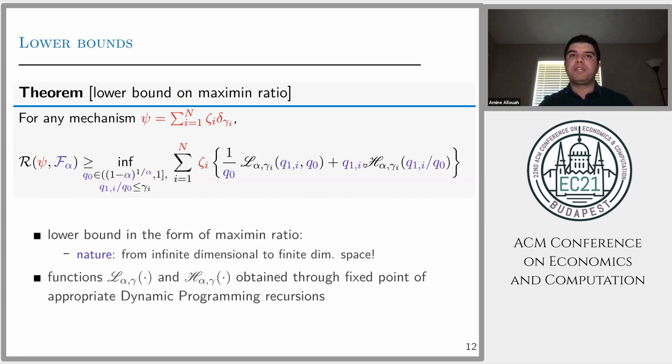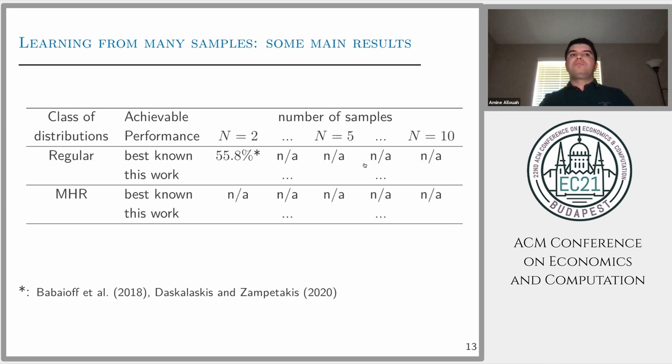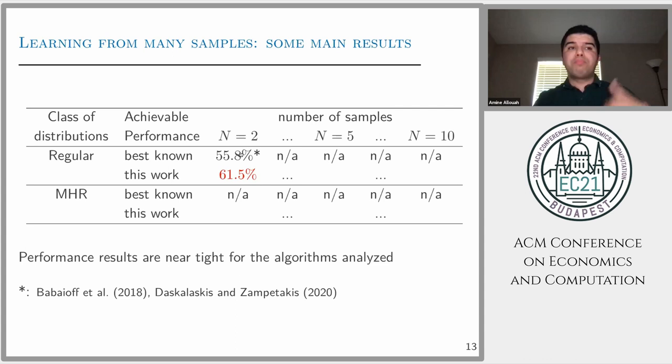What are the implications of the results? Let me first state the known results. In each row we have different classes of distributions. For the regular class of distribution and N equals 2, the most recent work has shown that there is a mechanism like ERM with a performance of 55.8% in the worst case against any regular distributions. But no other results were shown for N equals 5, 10, or 100. In this work we first improve this performance and show that there is a mechanism that achieves 61.5%.